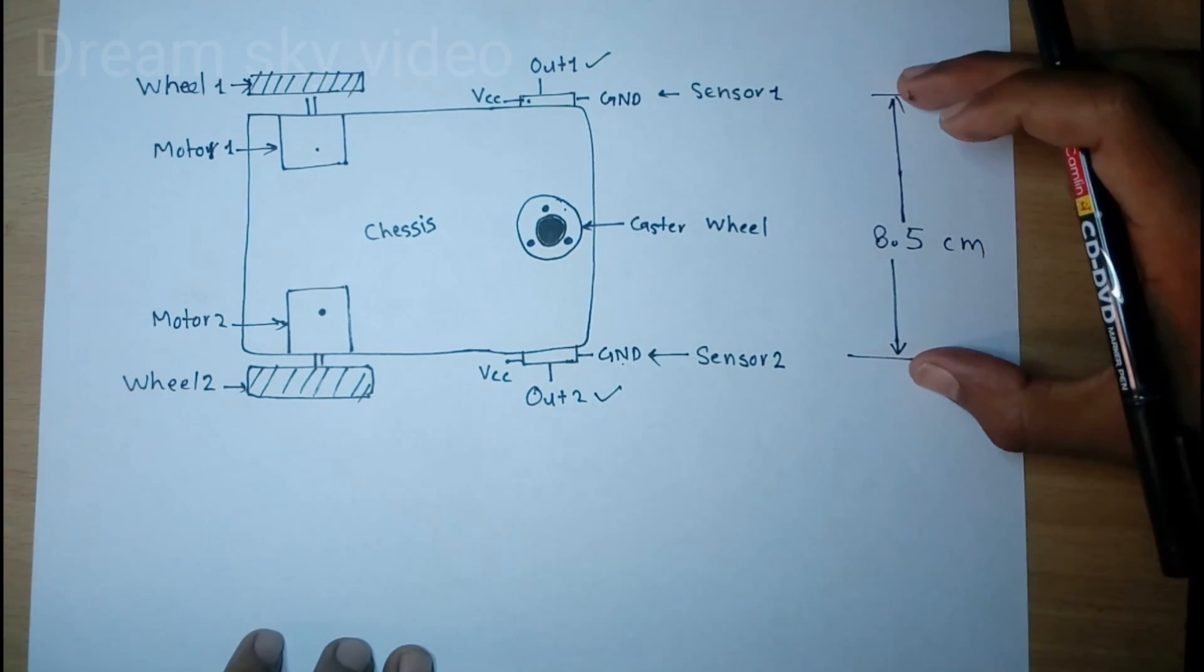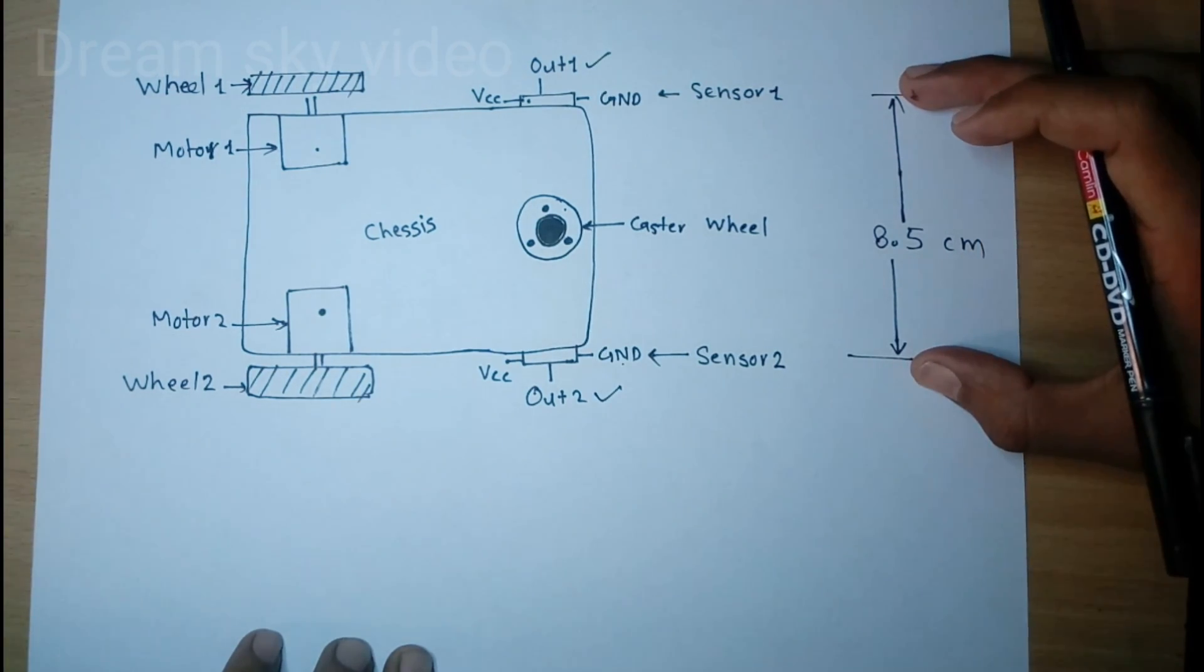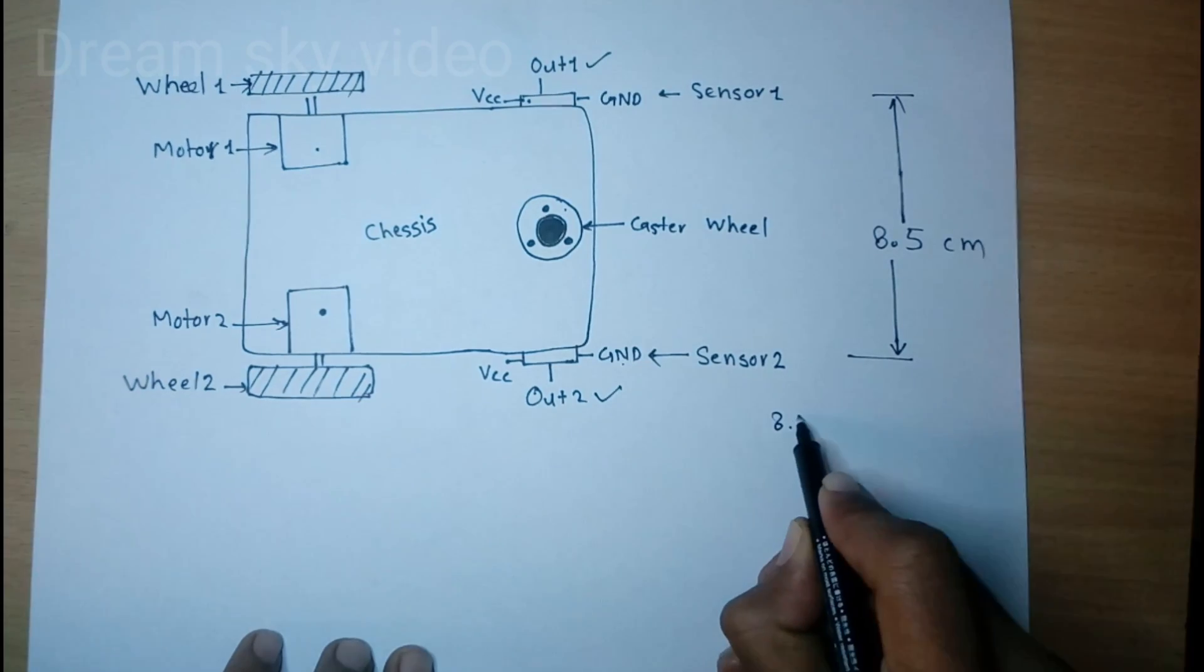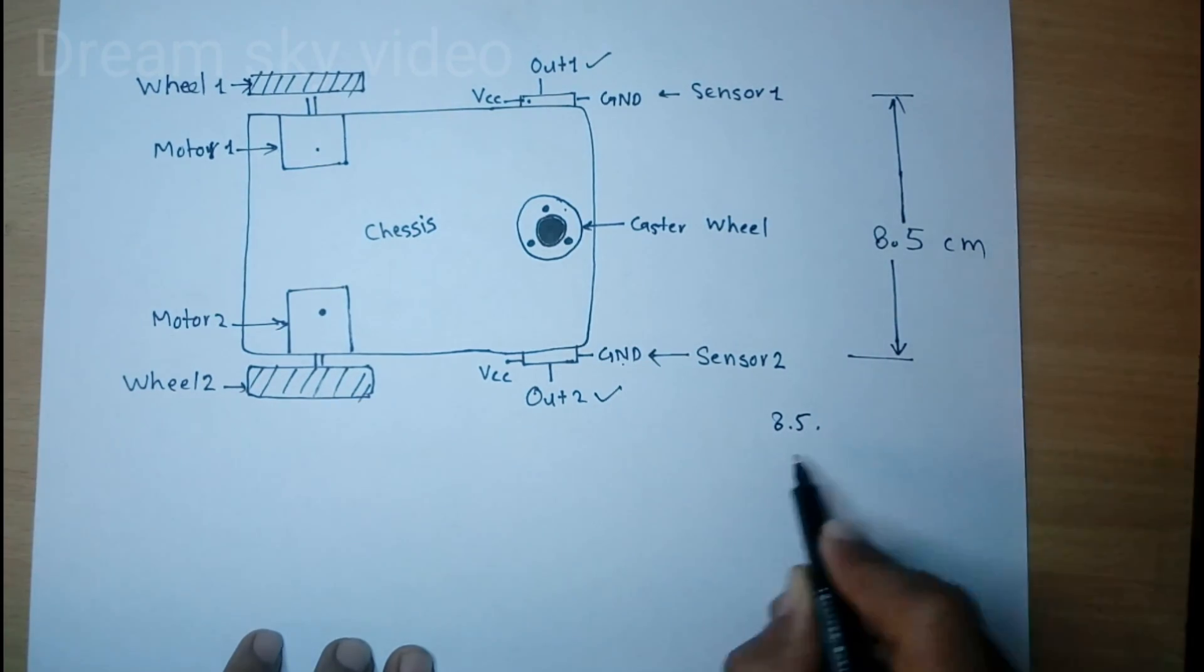Distance between sensors are 8.5 cm, so we use width of our line should lower than 8.5, and approximately seven to seven point five centimeter is best.